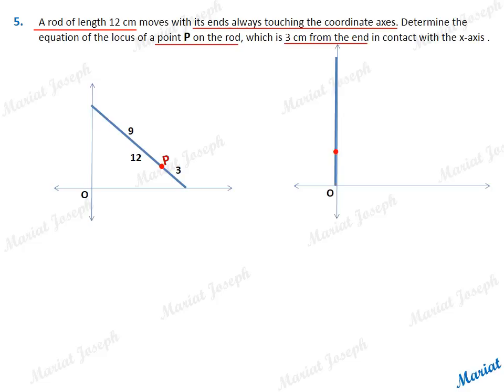Now place this rod vertically at the origin. Keep moving the rod touching both axes and observe the path of the red dot. What is the locus of that red dot which is placed 3 units away?